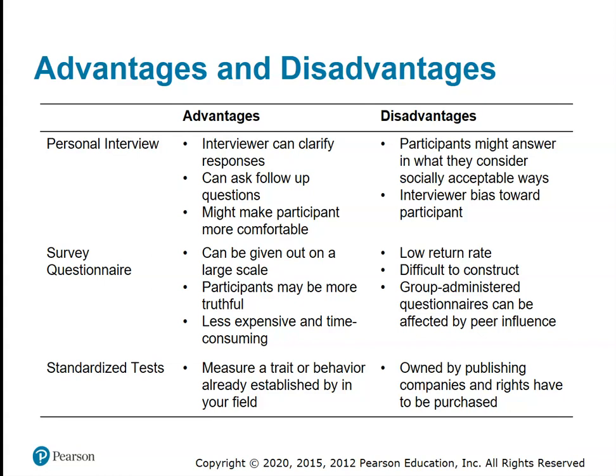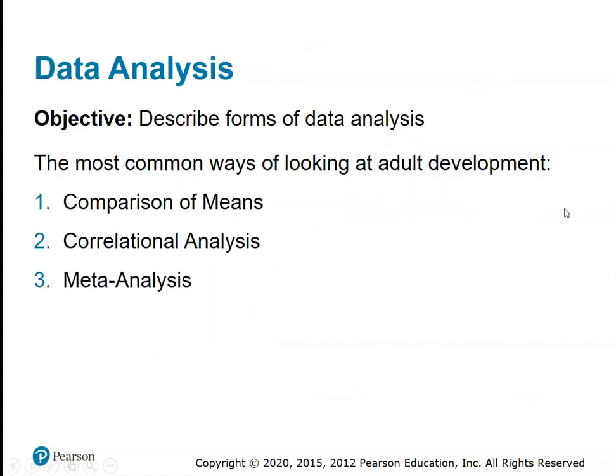When surveys are done in a group, we also have to consider whether the group setting, time of day, temperature, or day of the week skews results somewhat. Standardized tests have the huge advantage of allowing comparison of answers with everyone else who has ever taken that test, giving a measure with at least some reliability and validity. The problem is that test makers often charge for them, making them hugely expensive, and there may be restrictions on when, how, and where you can use them. All of these measures have their place, regardless of their strengths and weaknesses.